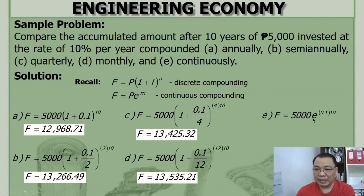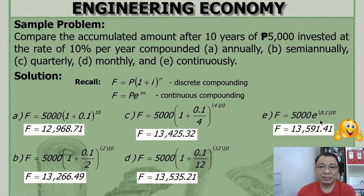This is the formula: P times e raised to r times n. And the value is 13,591.41. It's very simple.